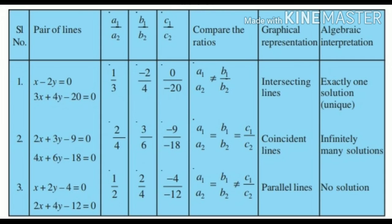Let's verify: a1 = 2, a2 = 4, so a1/a2 = 1/2. b1/b2 = 3/6 = 1/2. c1/c2 = −9/−18 = 1/2. So a1/a2 = b1/b2 = c1/c2, confirming these are coincident lines with infinite solutions. For Case 3 (parallel lines): a1/a2 = b1/b2 but a1/a2 ≠ c1/c2, giving parallel lines with no solution.